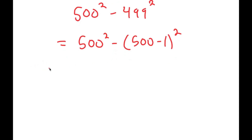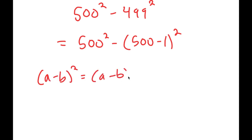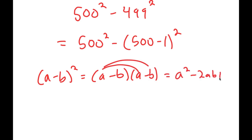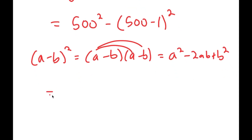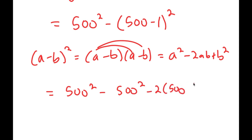If I have something in the form a minus b squared, this is equal to a minus b times a minus b, which, if I factor this out, is a squared minus 2ab plus b squared. So this turns into 500 squared minus the quantity 500 squared minus 2 times 500 times 1 plus 1 squared.